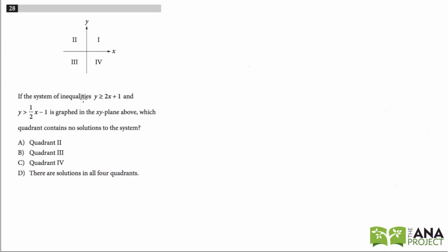If the system of inequalities y is greater than or equal to 2x plus 1 and y is greater than one-half x minus 1 is graphed in the xy-plane above, which quadrant contains no solutions to the system?